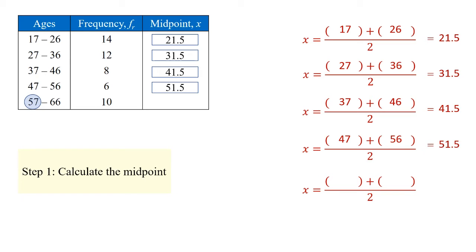For the fifth and final category or group, people aged 57 to 66, we add these two numbers together, divide by 2, and we have a midpoint value of 61.5.